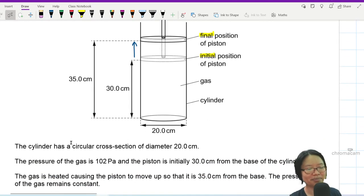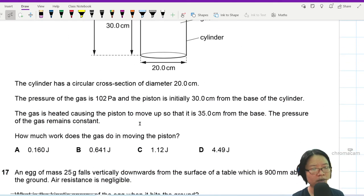The cylinder has a circular cross-section of diameter this much. Pressure of the gas is 102 Pascal and the piston is initially 30 cm from the base. Gas is heated so you're adding energy to the gas causing the piston to move up so that it is now 35 cm from the base. Pressure remains constant.